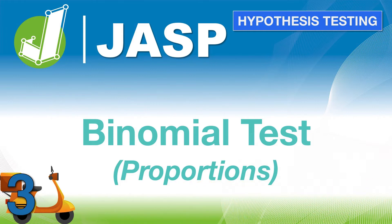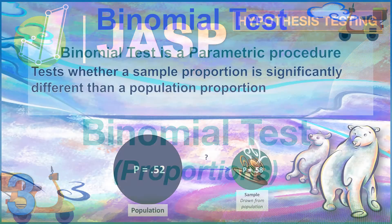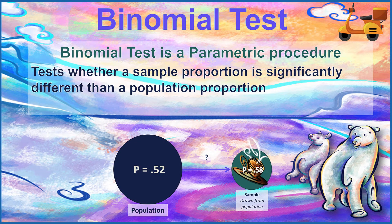Along the way, I will also explain the difference between a binomial test and a proportion test. A binomial test is a parametric procedure, meaning that it uses values drawn from a population to compare a sample. It tests whether a sample proportion is statistically significantly different than a population proportion. In this example with the polar bears, we have a population value of 0.52, but a sample drawn from that population renders a proportion of 0.58. Is that sample proportion of 0.58 statistically significantly different from the population? We will use a binomial test to figure it out.